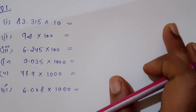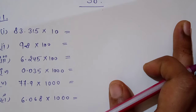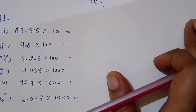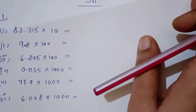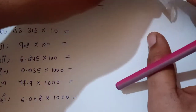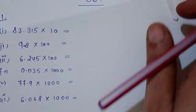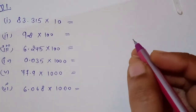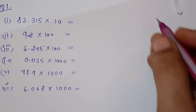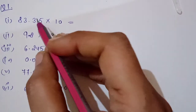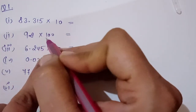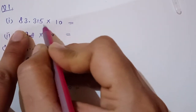This is the first question. Now let's see the solution — how we will solve this. Remember one thing: the question says that without doing the actual multiplication you are going to solve the question. So what we will do is — forget about the decimal, 10, 100 — first see how we are multiplying.